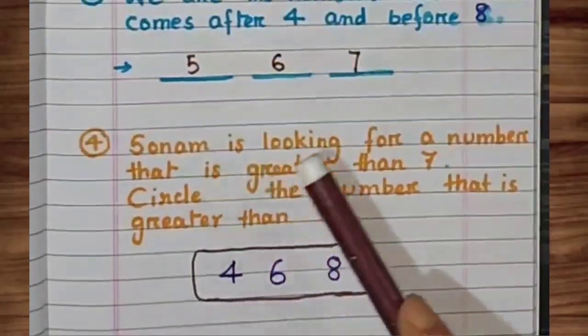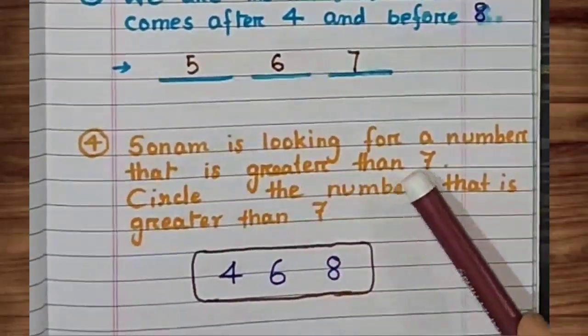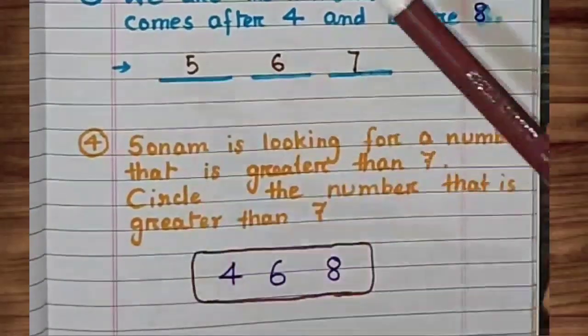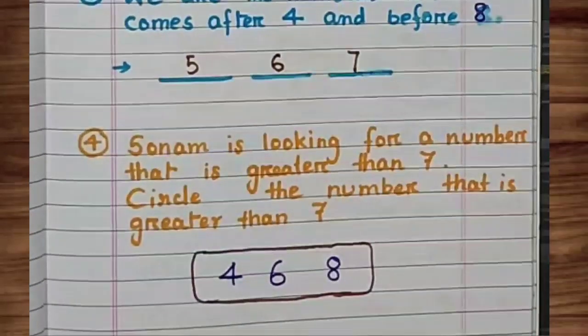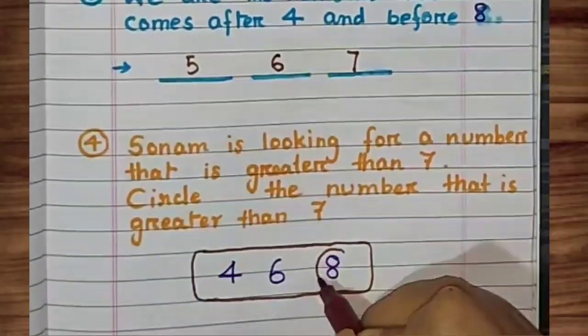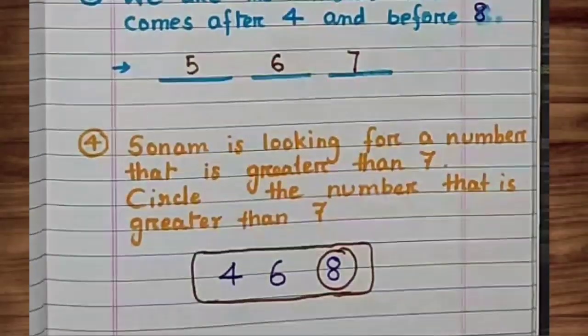Next, Sonam is looking for a number that is greater than 7. Circle the number that is greater than 7. Greater means zyada. Kaunsa number zyada hai? 8. Number 8 is greater than 7.